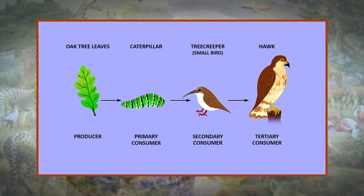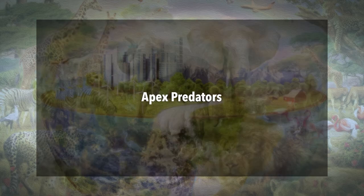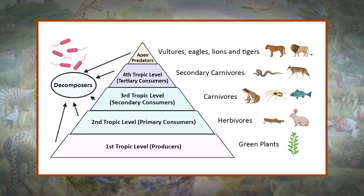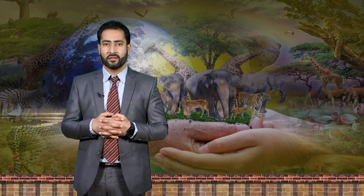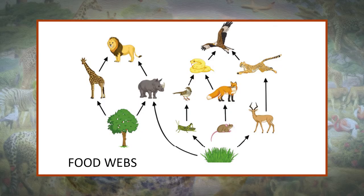In turn, owls may be hunted by eagles and hawks, and are therefore not apex predators. Apex predators are organisms at the top of the food chain which do not have any natural predators. Eagles, wolves, large cats such as lions, jaguars, and cheetahs, and marine animals such as sharks, tuna, killer whales, and dolphins are all examples of apex predators. Apex predators often have specific adaptations which make them highly efficient hunters, and sometimes they work within groups enhancing their hunting success.